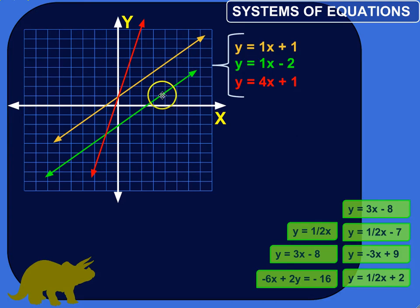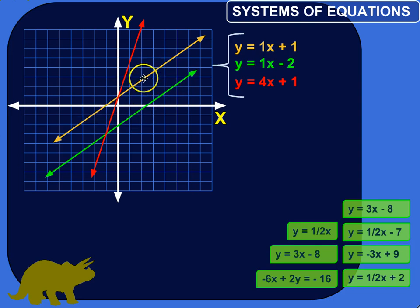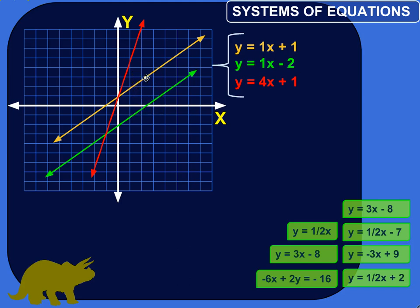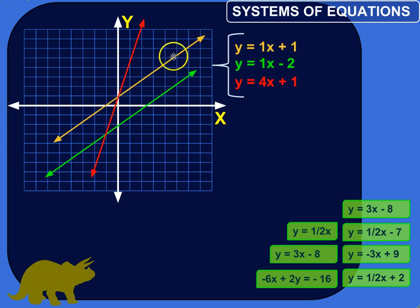Look at these two parallel lines. Ignoring the equations for a second, what can you observe about their slopes or the steepness of these lines? It looks like the slope is the same — these lines are at the same angle, the same slant, the same slope. So parallel lines have the same slope, but they pass through different points. For example, the y-intercept of the beige line is 1, whereas the y-intercept of the green one is negative 2. They have the same slope but different intercepts.